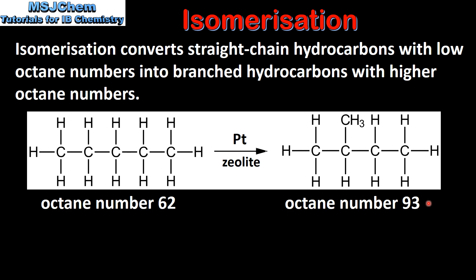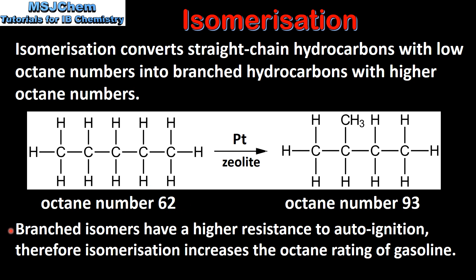It has an octane number of 93 compared to an octane number of 62 for the straight-chain isomer. Branched isomers have a higher resistance to auto-ignition, therefore isomerization increases the octane rating of gasoline.